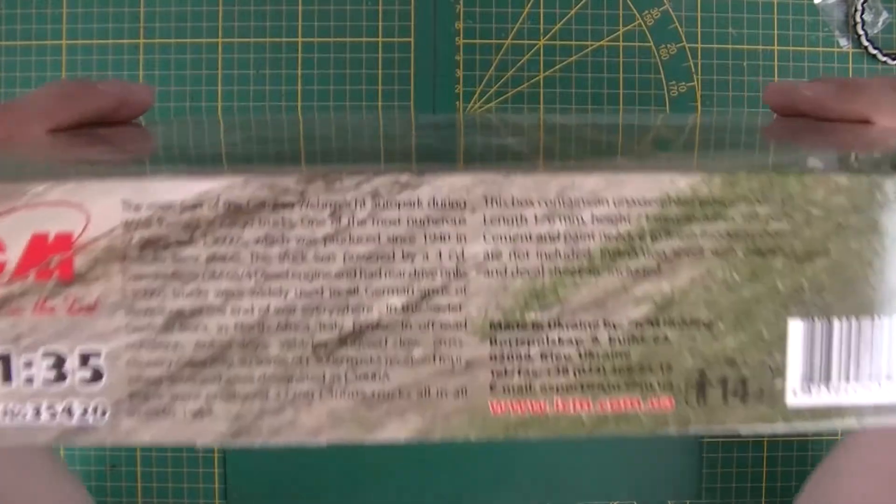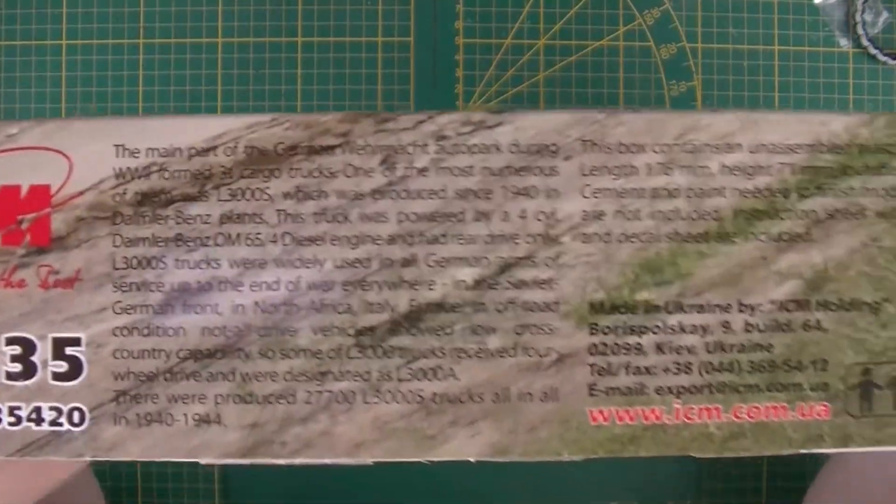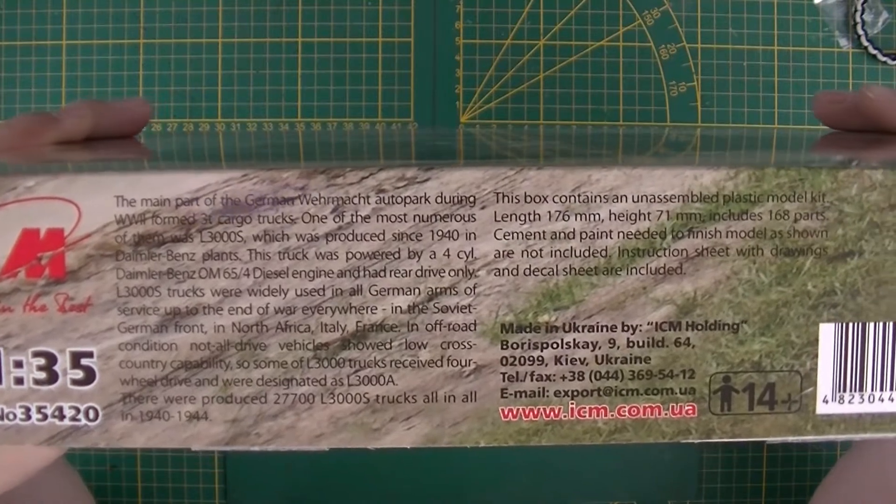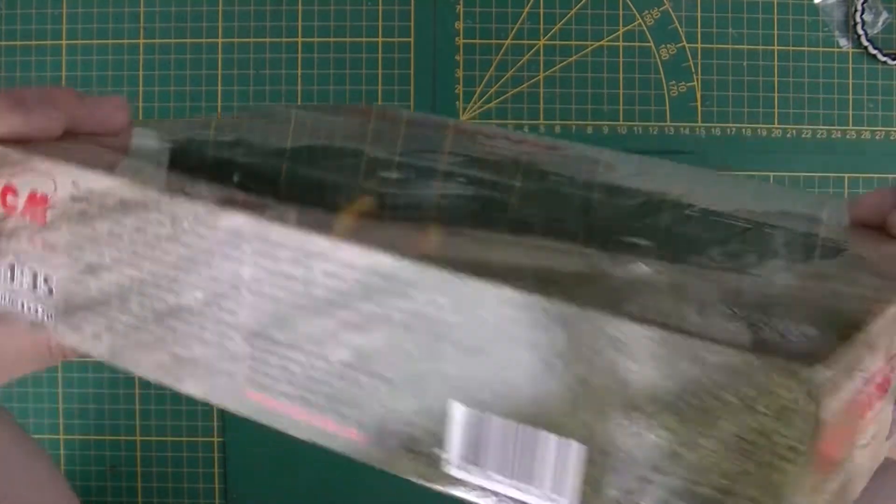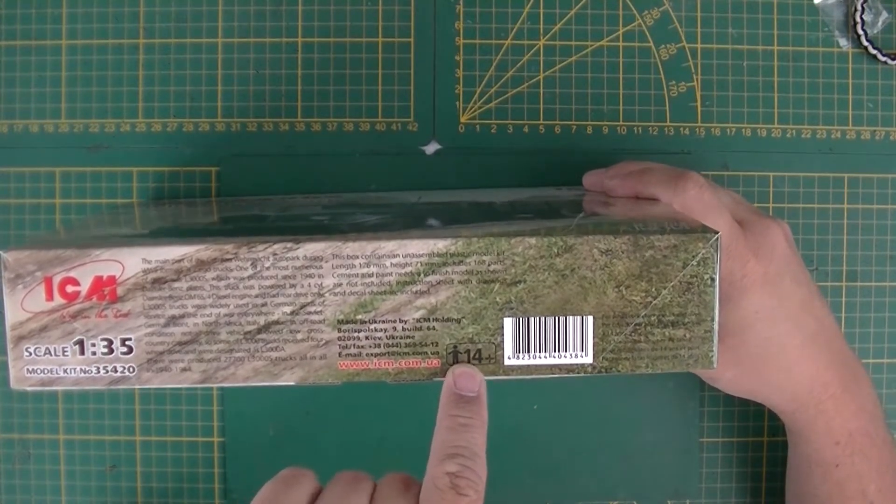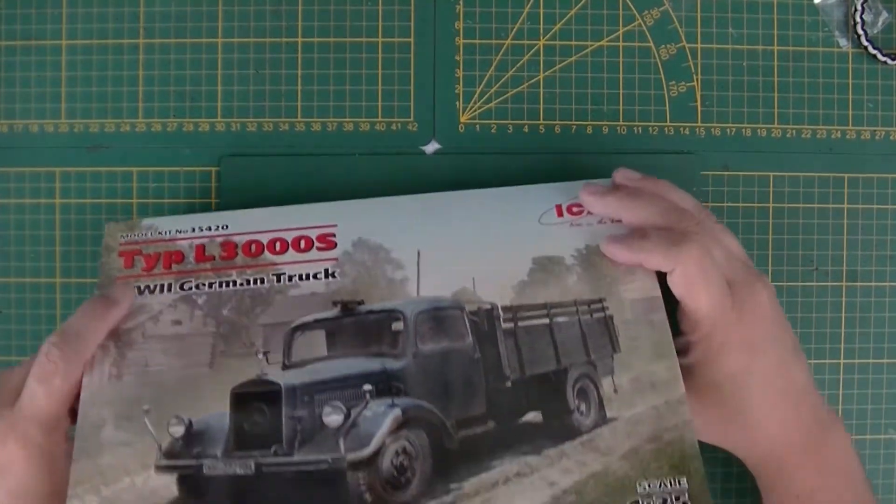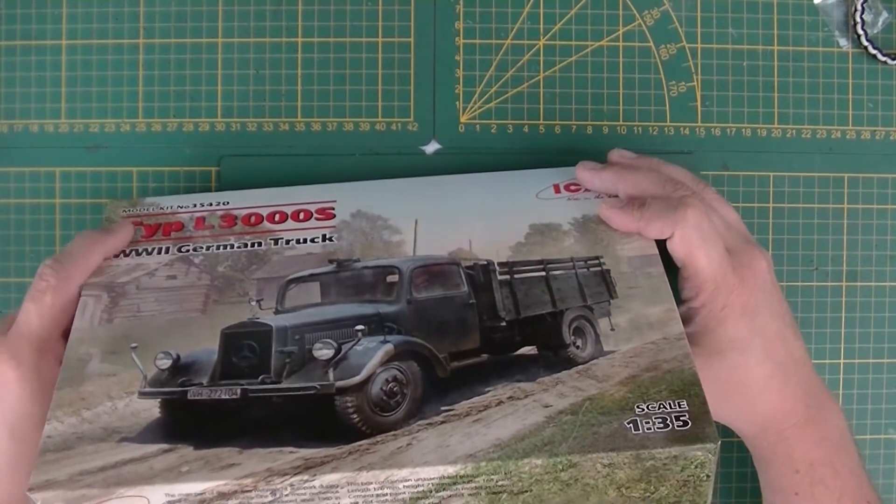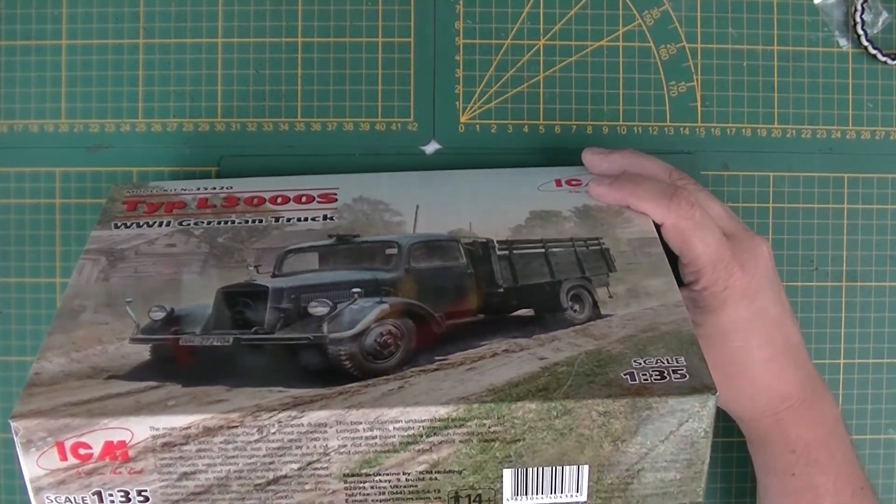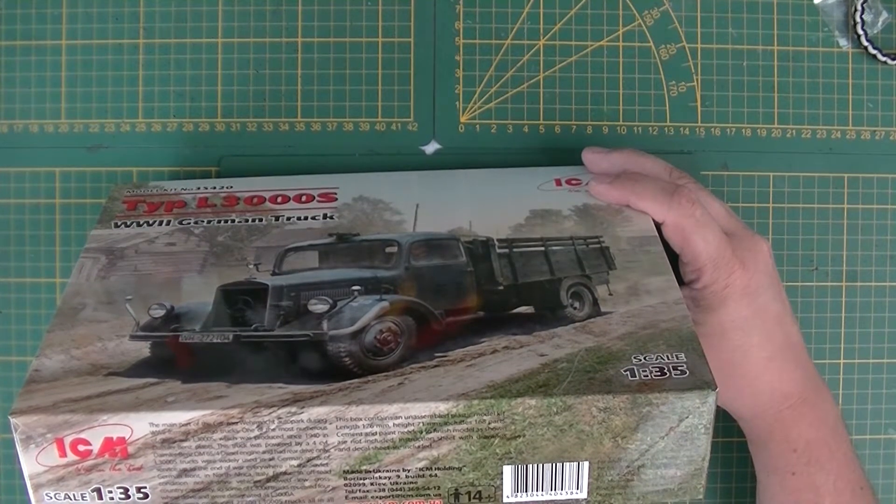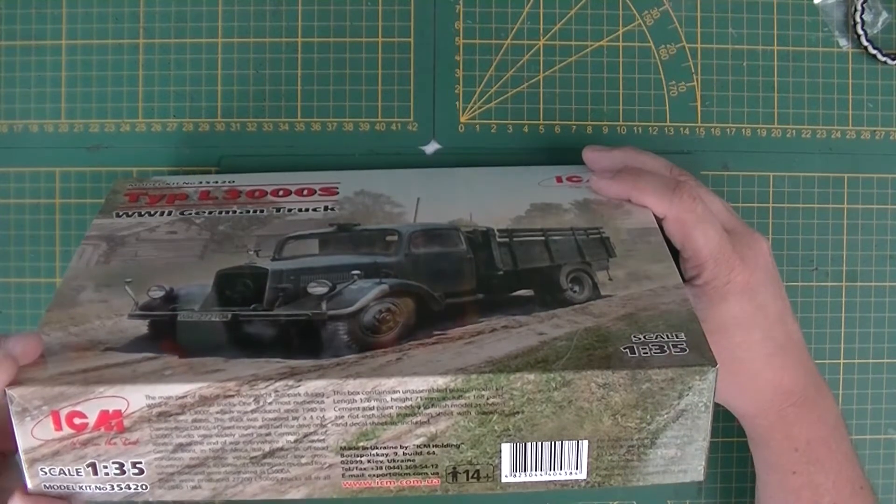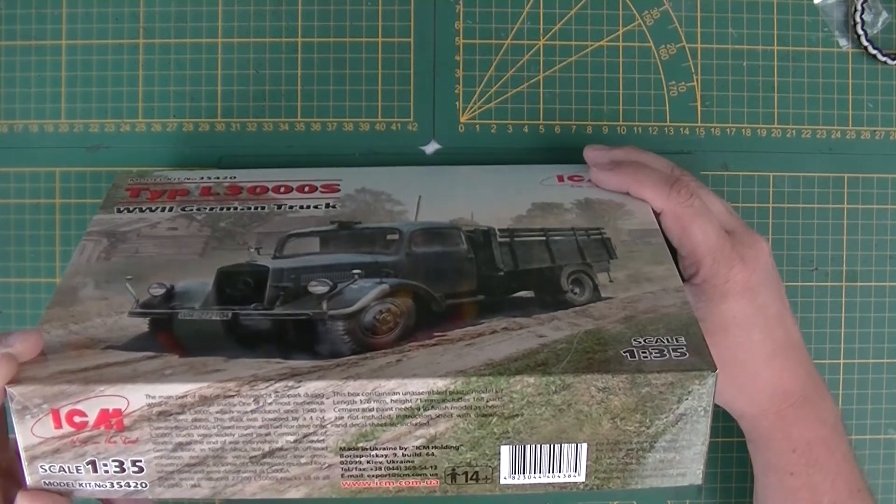1:35 scale, here's a little write up. If you want to read it, just pause it. Contact details. It is 168 parts, 70.6mm in length and 7.1cm in height.